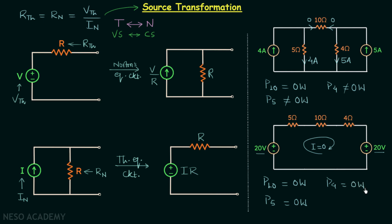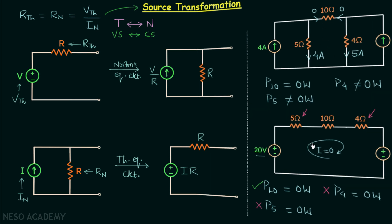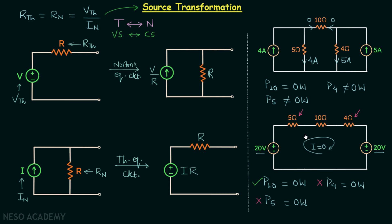We observe that the 10-ohm resistor has the same power dissipation before and after transformation. But the 5-ohm and 4-ohm resistors do not, because they are involved in the transformation. The conclusion is: do not perform calculations for resistances which are involved in the transformation. Only the 10-ohm resistor, which is not involved, gives reliable results. This is all for this lecture — see you in the next one.